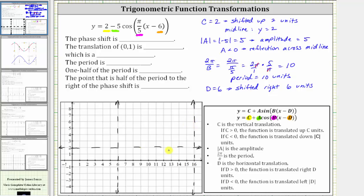Before we graph, let's divide this interval into four equal subintervals. Half the period is equal to half of 10, or five units — six plus five is 11. Let's make a vertical line at x equals 11. One fourth of the period is equal to 2.5 units. Starting at six, six plus 2.5 is 8.5 — let's make a vertical line at x equals 8.5. We already have a line at x equals 11; 11 plus 2.5 is 13.5, so let's sketch another vertical line at x equals 13.5.